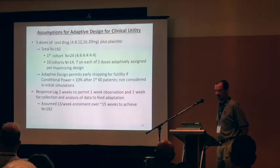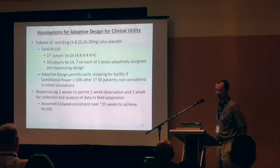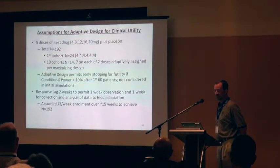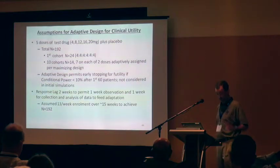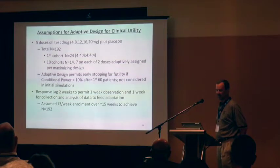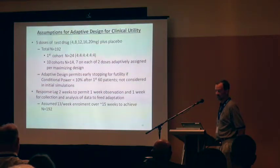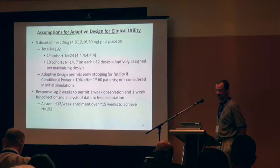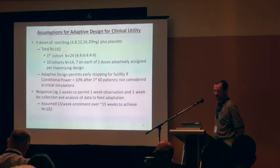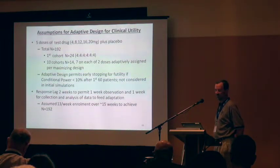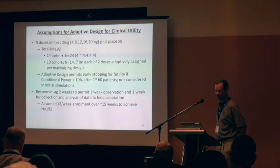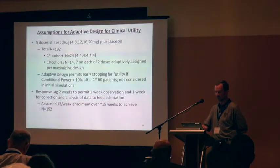This design had five doses plus placebo. The first cohort was 24, equally allocated to all doses and placebo. Then there were ten cohorts of 14 — seven on each of two doses adaptively assigned per the maximizing design. The adaptive design permitted early stopping for futility if the conditional power was less than ten percent, but after a minimum of 60 subjects. There was a response lag of two weeks, and we assumed 13-per-week enrollment over 15 weeks.